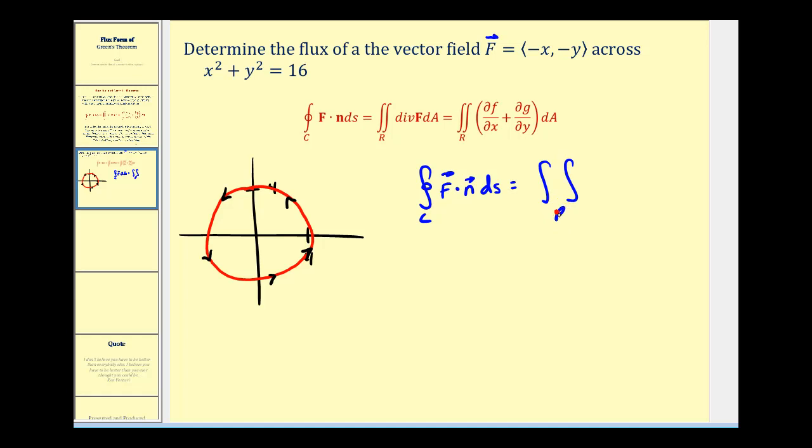So we'll have the double integral over the region, where the integrand is the partial root of F with respect to X. That's going to be negative one, plus the partial root of G with respect to Y. That's also going to be negative one dA. And because our region is a circle, let's go ahead and integrate this using polar coordinates.